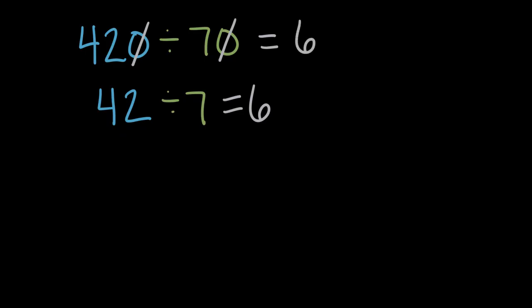And here's one last one. What if we had 5,600 divided by 80? So the first thing I notice is I have zeros at the end of both of my whole numbers.